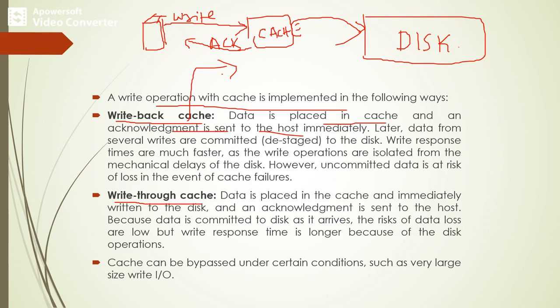In write-through cache, the host sends the data to be written into the cache. The cache sends the data into the disk, and after completing the successive write operations to the disk, the disk sends an acknowledgement to the cache, and the cache then sends an acknowledgement to the host. So in write-through cache, it is a continuous process — data travels from the host through the cache to the disk, and acknowledgement flows back before completion is confirmed.